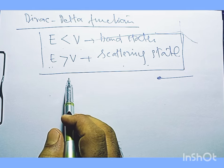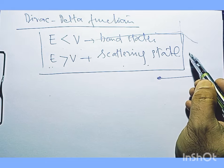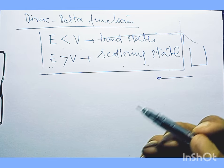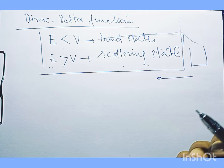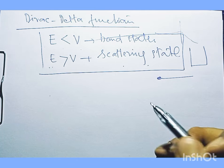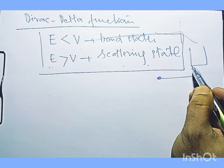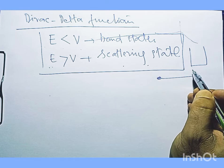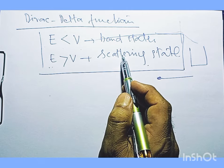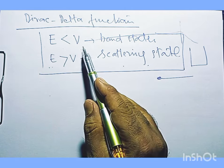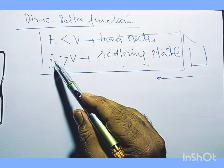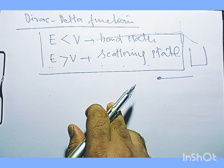For the infinite square well problem, where we calculate the energy eigenvalues — the quantized energies for the particle — and for harmonic oscillator potentials, in both cases the potential goes to infinity. Since the potential goes to infinity, we can assign the situation to bound states for the solution of the time-independent Schrödinger wave equation, and scattering states for the solution of the time-dependent Schrödinger wave equation.